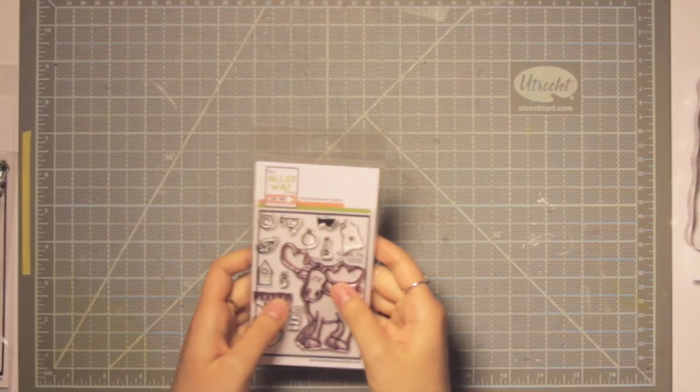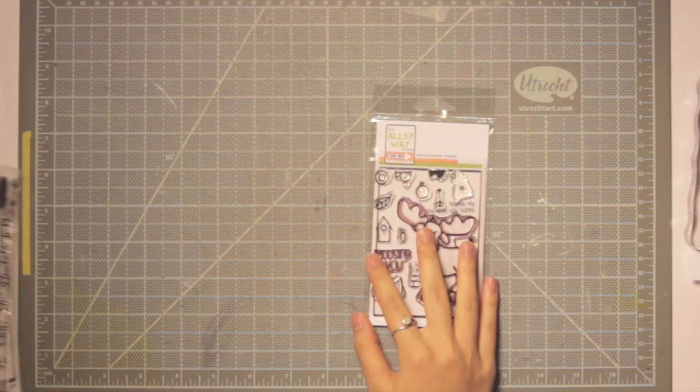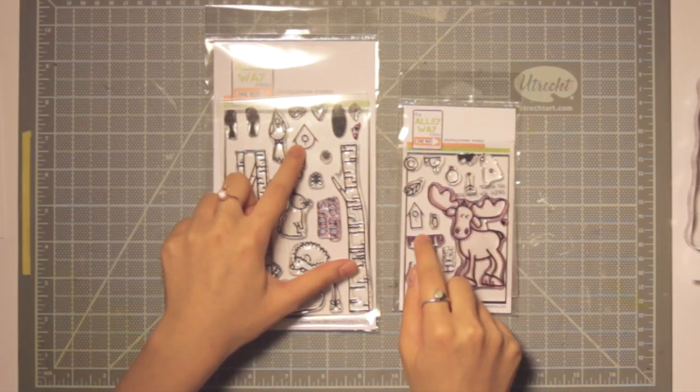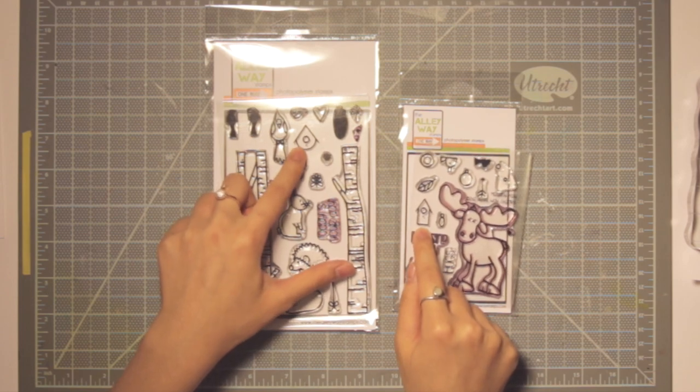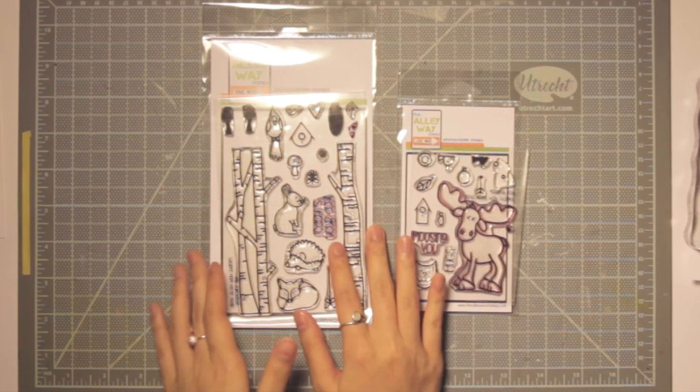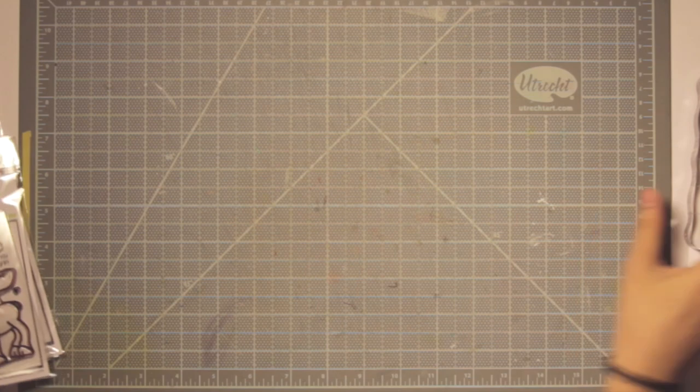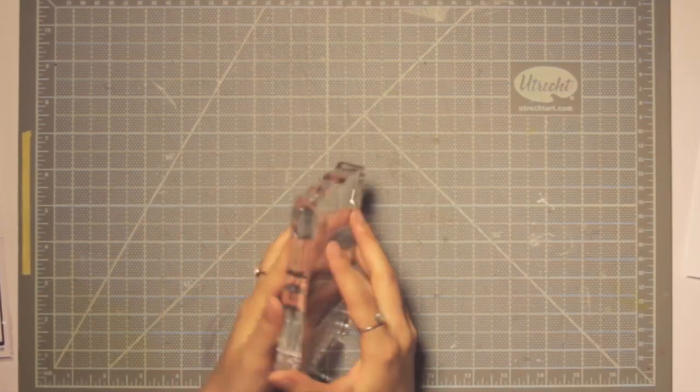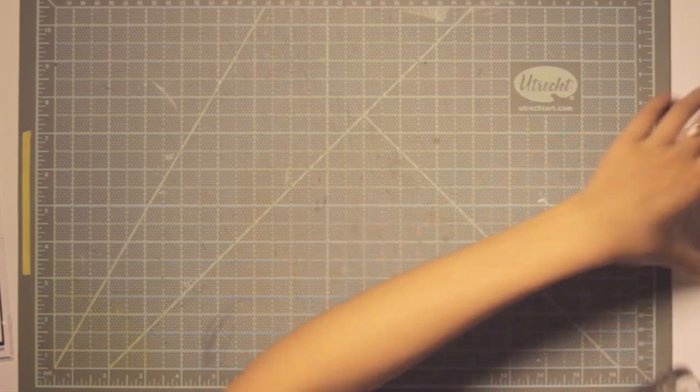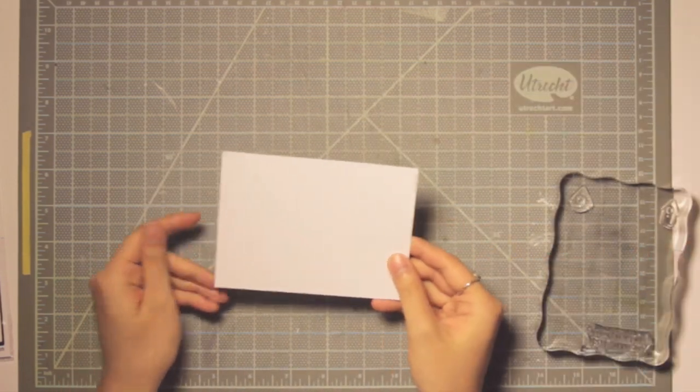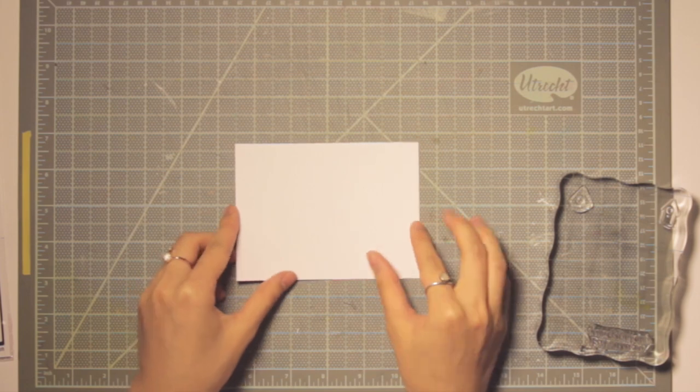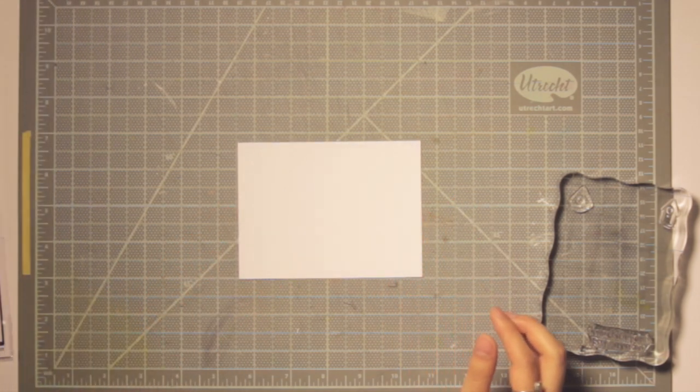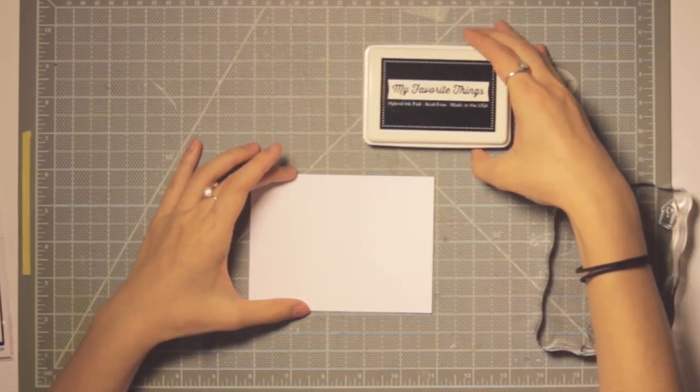So I pulled out two stamp sets from Alleyway Stamps. The one on the right here is called Musen Yu, and the one on the left is called Branching Out. I've already taken these stamps out and mounted them onto my acrylic block on opposite sides, which I'm just showing you here. And this makes it really easy for me to just switch back and forth. I just find it's really helpful and saves a lot of time so you don't have to unmount your stamps and then mount them back on.